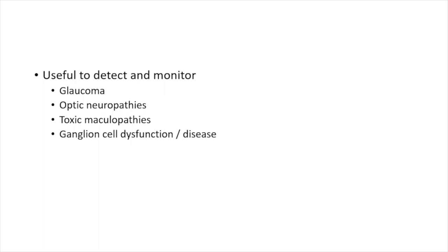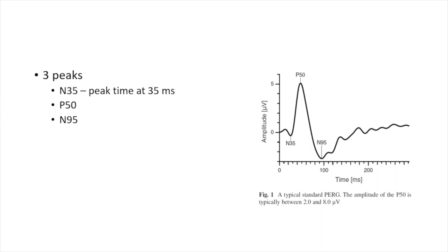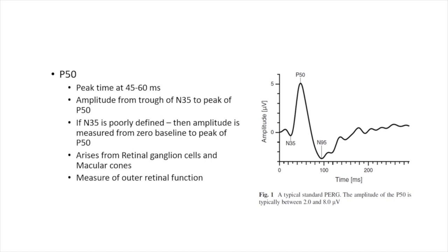Pattern ERG is a valuable tool in neurological and ophthalmological practice — useful to detect and monitor glaucoma, optic neuropathies, toxic maculopathies, and ganglion cell dysfunction. Pattern ERG can also help differentiate between retinal and optic nerve disease. It is a transient response recorded at less than 6 reversals per second. P50 arises from macular cones; N95 arises from retinal ganglion cells. The amplitude of P50 is measured from the trough of N35 to the peak of P50 (or from baseline if N35 is not present).